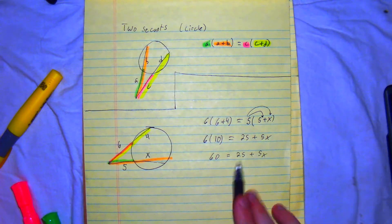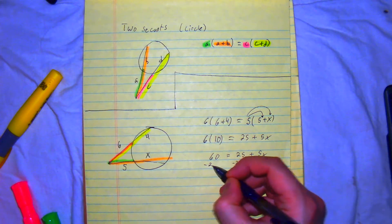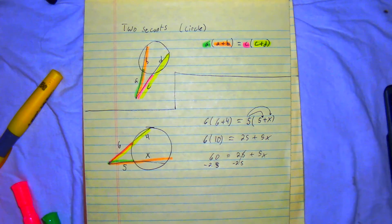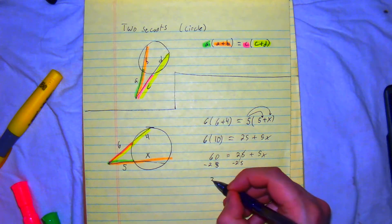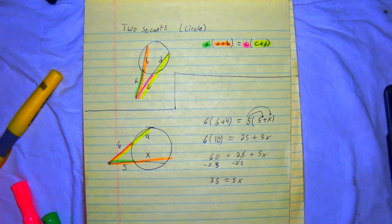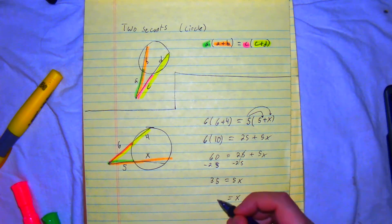From here, you're going to subtract 25 to both sides. Oops, I'm 24. Sorry. So, 60 minus 20 would give you 40. And then 40 minus 5 would give you 35. You divide both sides by 5. So, you would get X equal to 7.